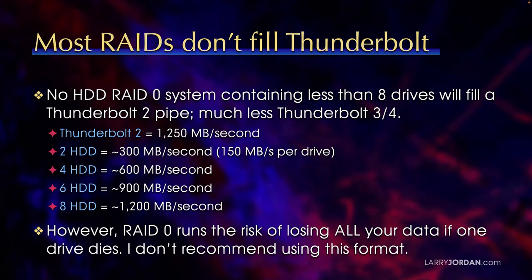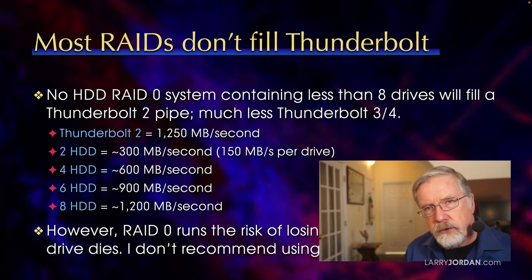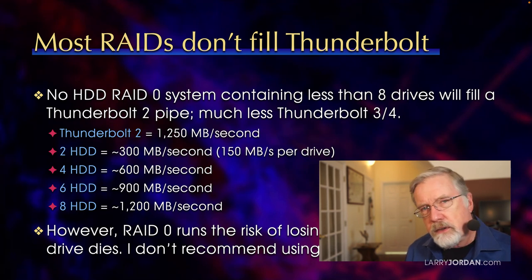But there's more to the story. Most RAIDs used for video editing don't fill a Thunderbolt pipe. No HDD RAID 0 system containing fewer than 8 drives will fill a Thunderbolt 2 pipe, much less Thunderbolt 3 or 4. Thunderbolt 2 has a maximum data transfer rate of 1,250 megabytes per second; the remainder of the pipe is devoted to monitors. Two hard drives transfer data at about 300 megabytes per second, assuming 150 megabytes per drive. Spinning media can range from 100 to 220 megabytes per second — 150 is a good plug number to use.